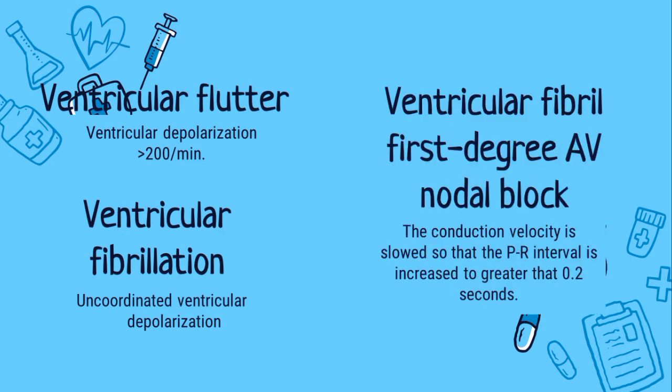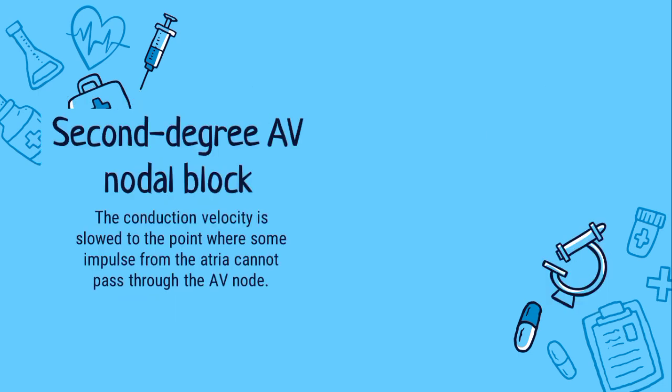Next is the first-degree AV nodal block. It is a condition of abnormally slow conduction through the AV node, defined by ECG changes that include a PR interval of greater than 0.2 seconds without disruption of atrial to ventricular conduction. This can be caused by enhanced vagal tone, digitalis, beta blockers, calcium channel blockers, or ischemic damage. This condition is generally asymptomatic and discovered only on routine ECG.